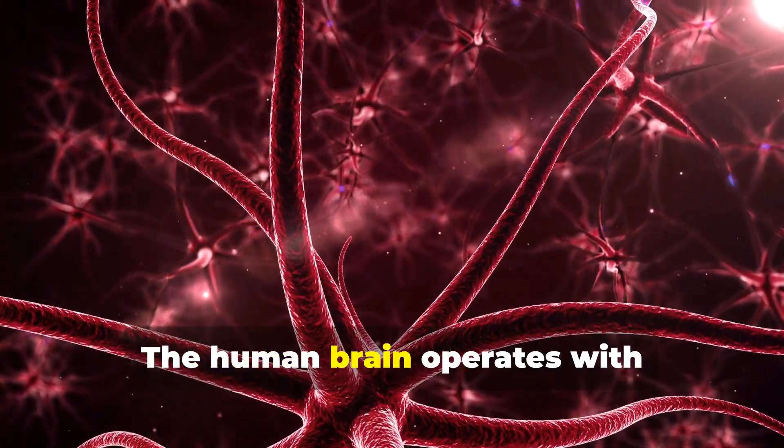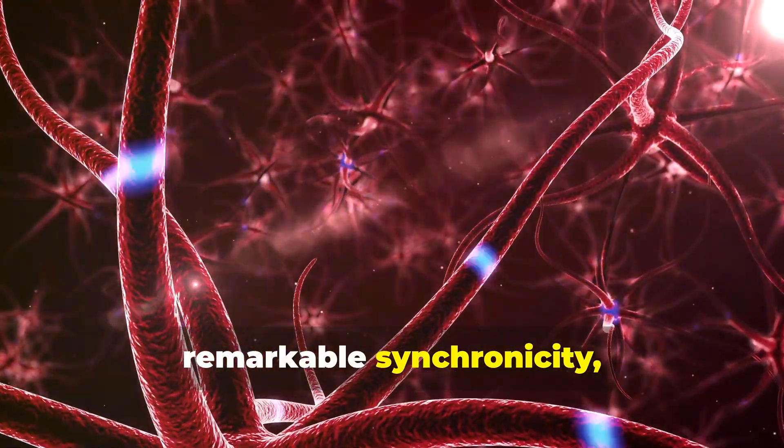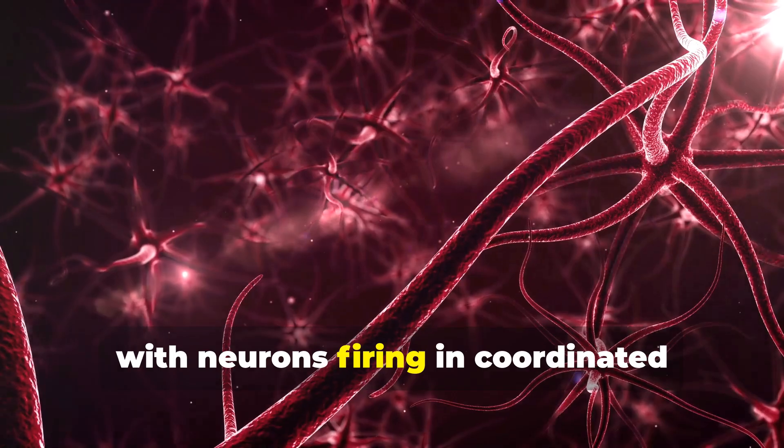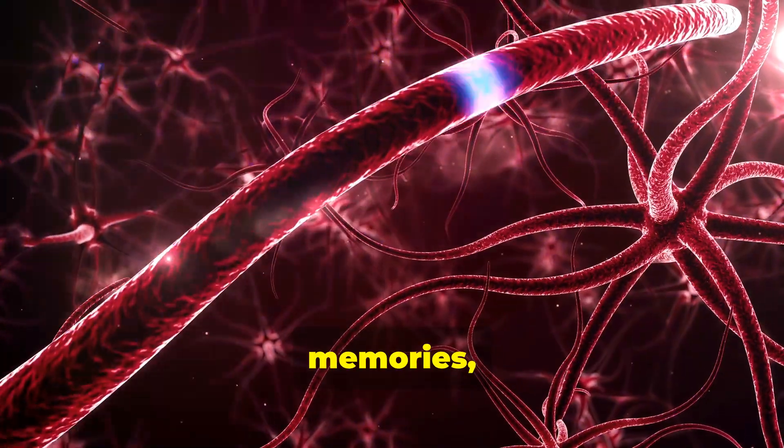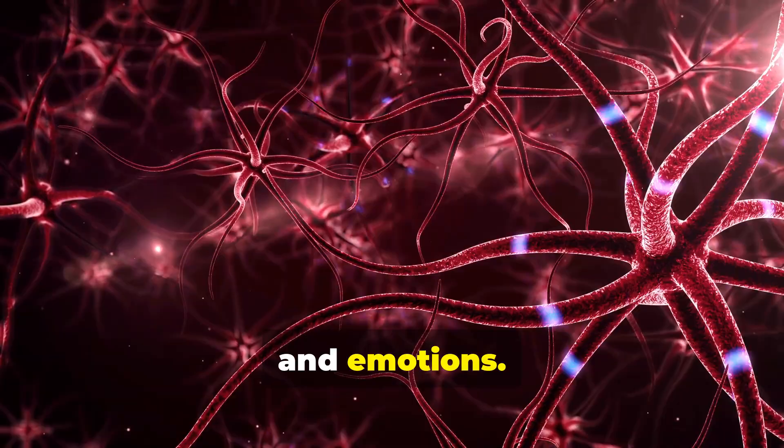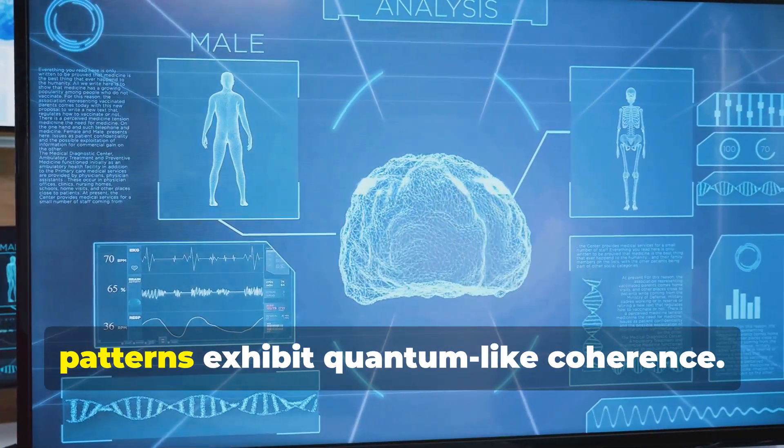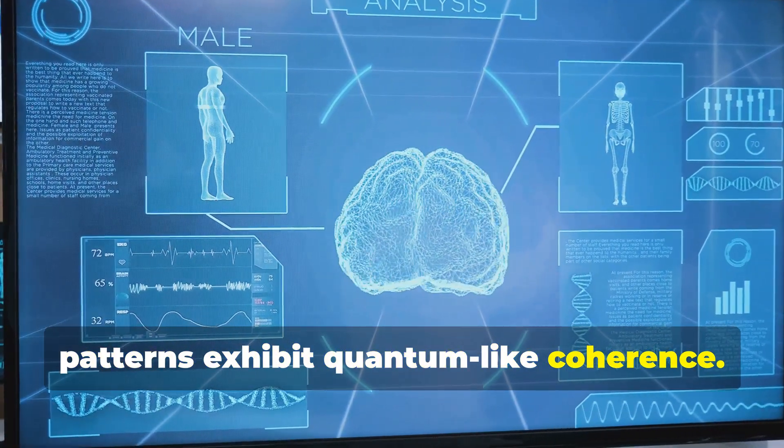The human brain operates with remarkable synchronicity, with neurons firing in coordinated patterns to create thoughts, memories, and emotions. Recent studies suggest that these patterns exhibit quantum-like coherence.